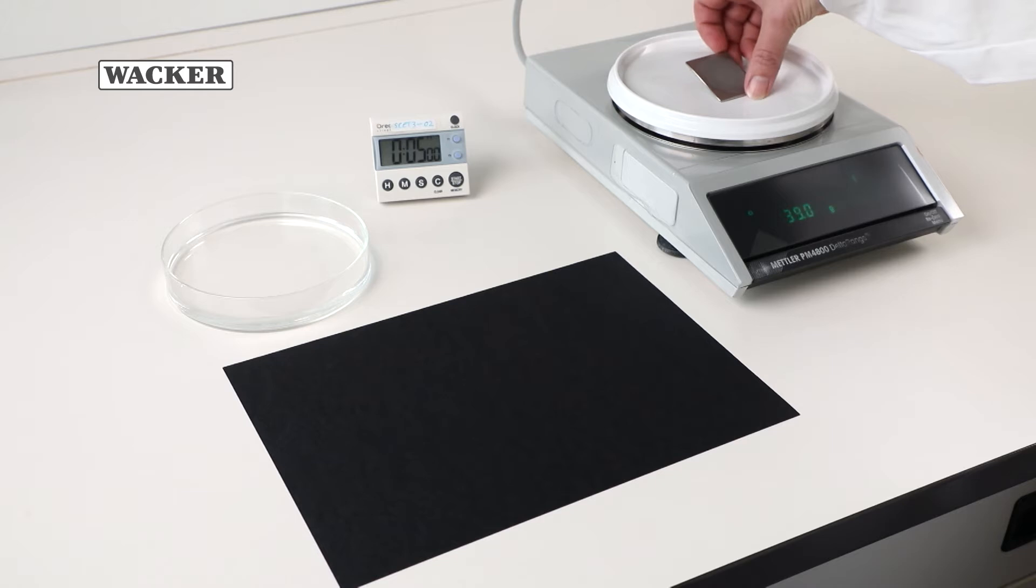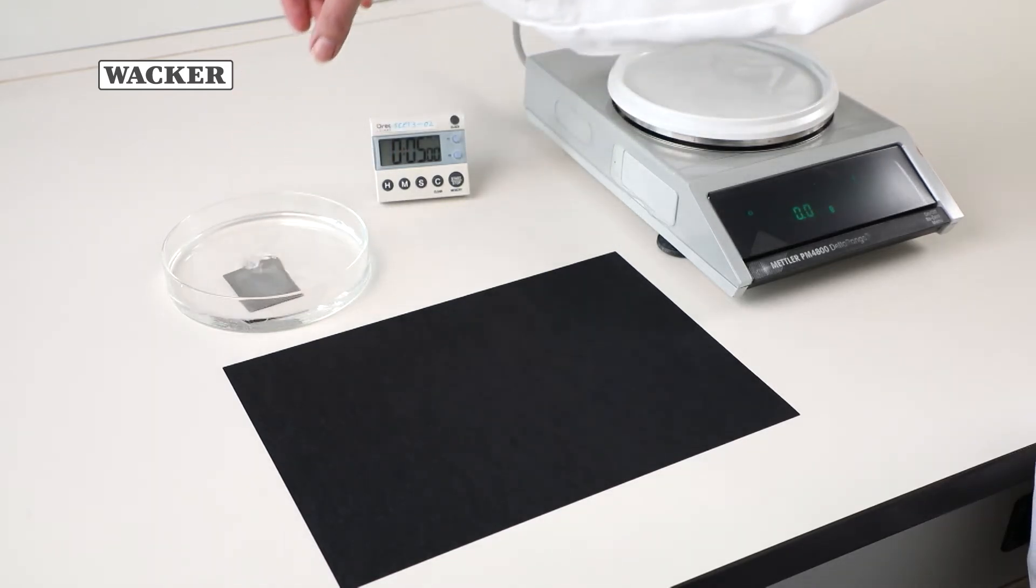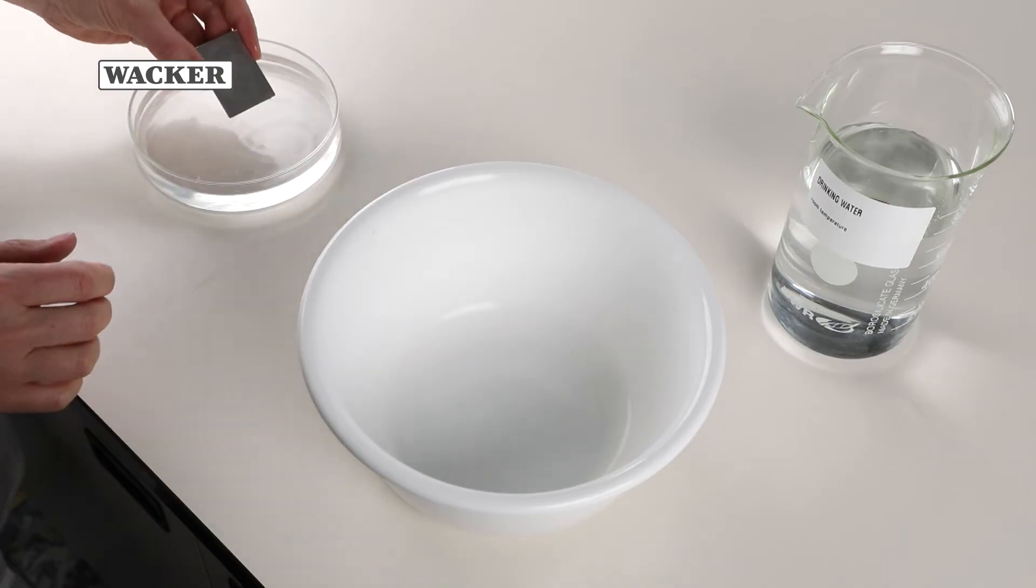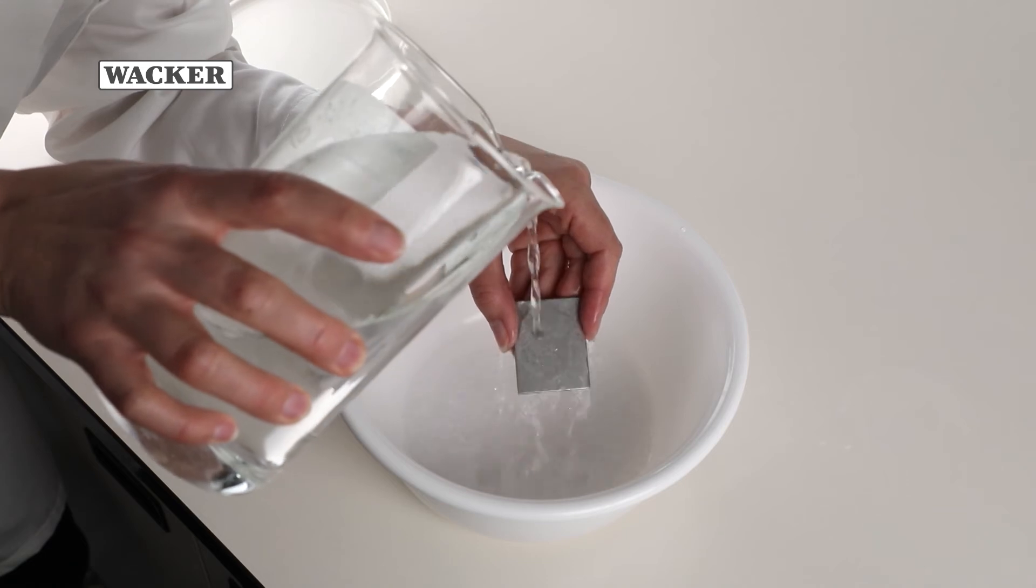Next, place the plate in room temperature tap water and allow to stand for 5 minutes. Once this time has elapsed, remove the plate and rinse with 1 liter of tap water from a height of approximately 5 cm.